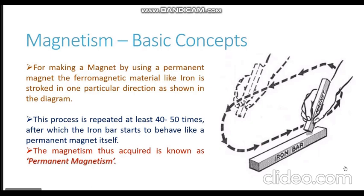Using this method you can convert a ferromagnetic material into a magnet, and the magnetism acquired is called permanent magnetism. Permanent magnetism means that after this process is done, even if you remove the parent magnet used to magnetize the iron bar, the iron bar will continue to exhibit its magnetic properties. That magnetism has been permanently acquired by the iron bar.